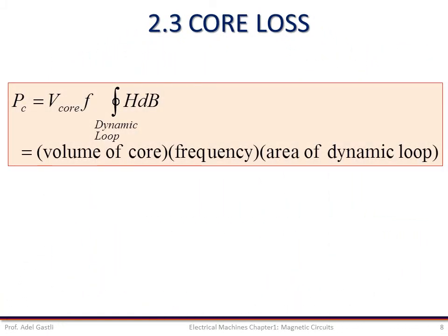The total core loss can be expressed as the product of the volume of the core, the frequency of the current, and the area of the dynamic loop. Using a wattmeter, core loss can easily be measured. However, it is not easy to know how much of the loss is due to hysteresis and how much is due to eddy currents. Fortunately, it is not necessary to know the losses separately. In electrical machines that have a magnetic core and a time-varying flux, core loss occurs and appears as heat in the core. This loss will be taken into account while discussing the behavior of electric machines in subsequent chapters.